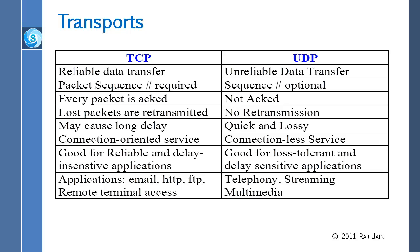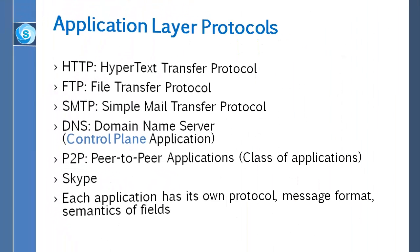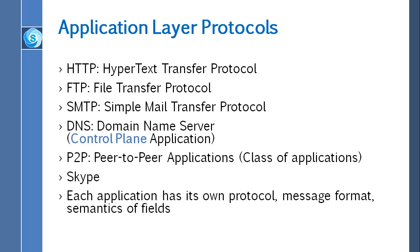In connectionless service, that first connection setup packet doesn't exist — you just send a packet directly, possibly with or without a sequence number. There are many applications where UDP is very useful. For example, in network management, all managed computers can send status messages like 'I lost two packets' to the managing server, and if some of those packets don't make it, that's fine. So there are many applications that don't care if packets are lost — those are connectionless UDP applications. In UDP, the application is totally responsible since the transport doesn't do much.